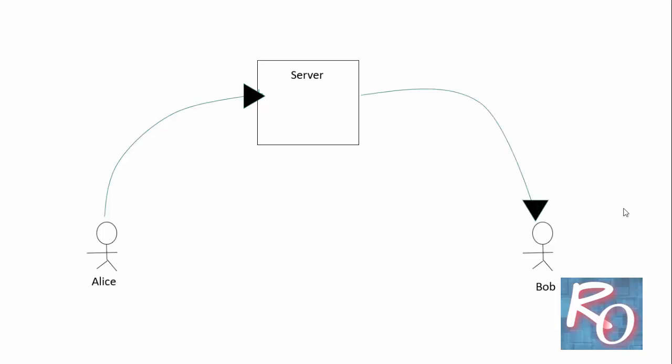The main drawback of this method is that a third person or hacker who is interested in the messages being sent from Alice to Bob can tap the communication line between Alice and the server and get to know all the messages being sent.